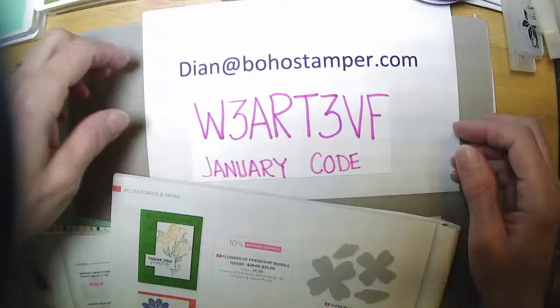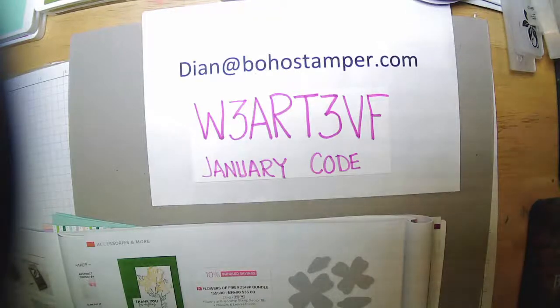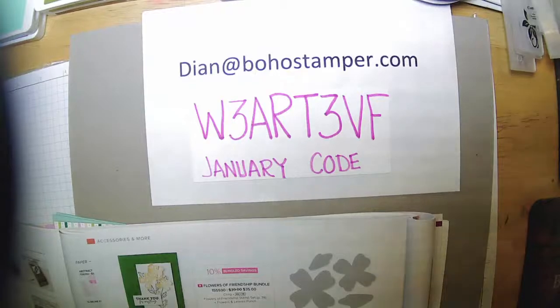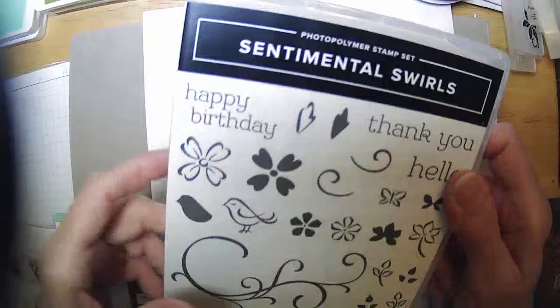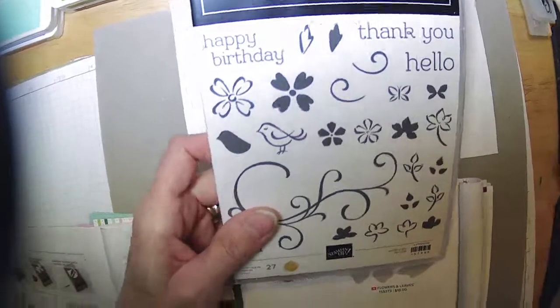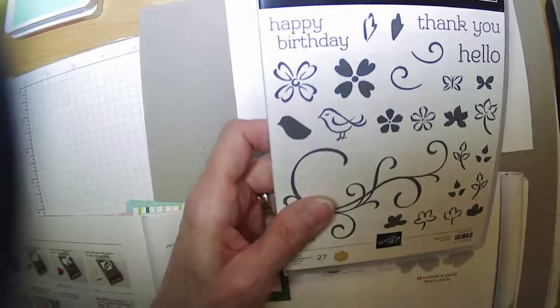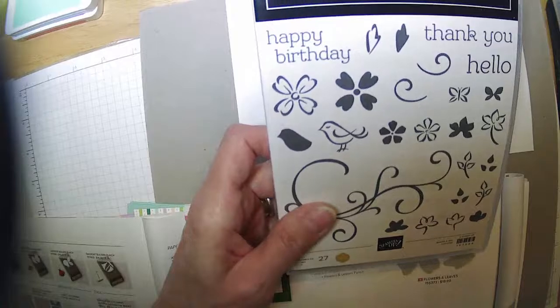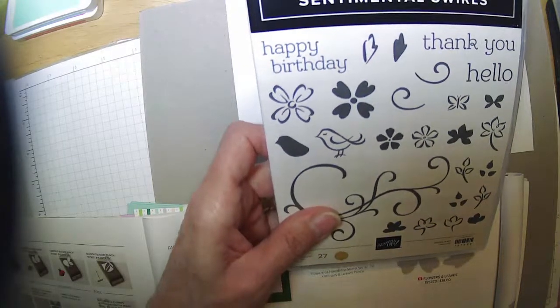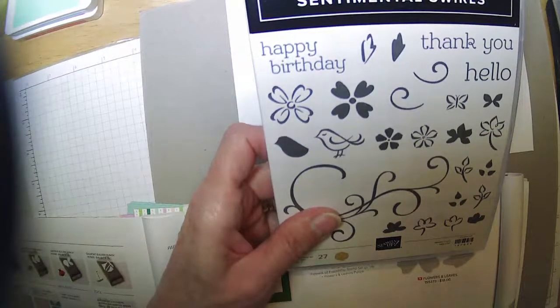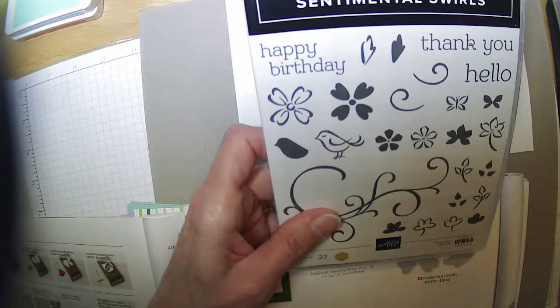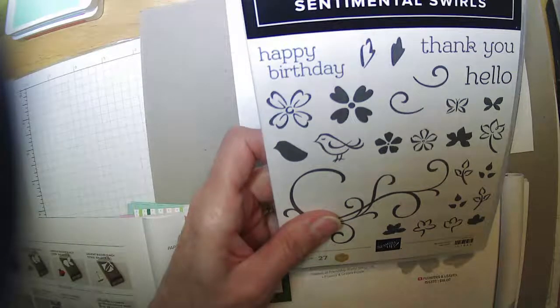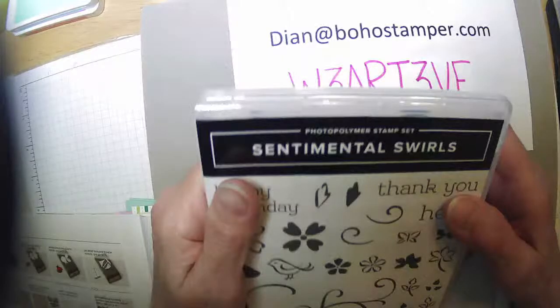So I have to go in later today and place an order. Now I'm kind of upset with myself because we're going to use Sentimental Swirls today and there is not a coordinating die set for this. It looks like I'm getting some buffering there. I apologize if you're getting some buffering. It could have something to do with the messy weather out there too. Hopefully it won't be too awfully bad. It does look like I'm freezing a little bit there.